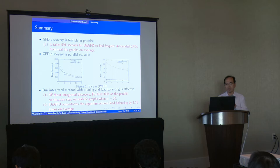The same phenomenon can be seen from the graphs Yago and IMDB. And our integrated method with pruning and load-balancing is effective. Without integrated discovery, the algorithm fails at the parallel validation step. And second, our algorithm outperforms the ones without load-balancing by 1.31 times on average.